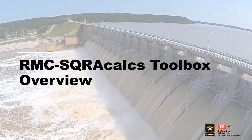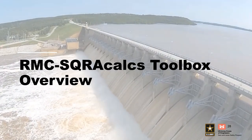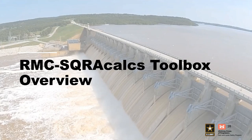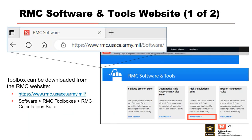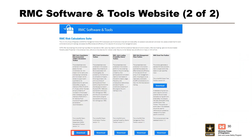Now that we understand semi-quantitative risk assessment calculations and how to portray results, we can go through the RMC SQRA Calc spreadsheet. The current version is located on the RMC Software website at www.rmc.usace.army.mil. From the RMC Software and Tools website, select Risk Calculation Suite, then select RMC SQA Calculation Toolbox.